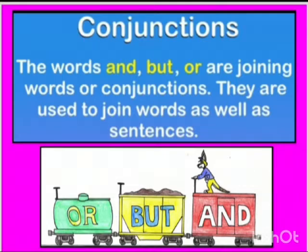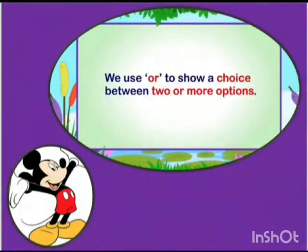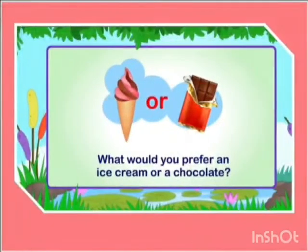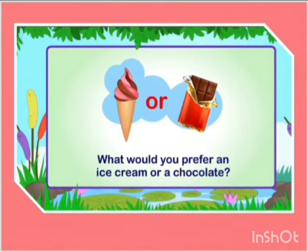Conjunctions: or, but, and. We use 'or' to show a choice between two or more options. Let's see how. Now, what would you prefer — an ice cream or a chocolate? Over here, two options, that is, two choices are given: ice cream or chocolate. So we will merge the sentence by using the conjunction 'or'.